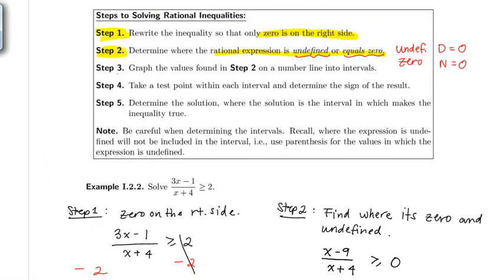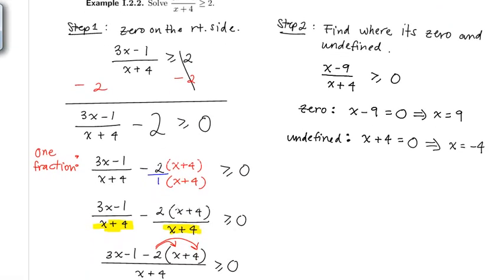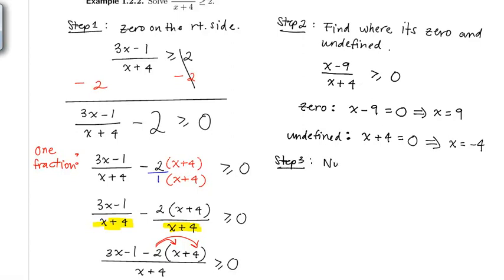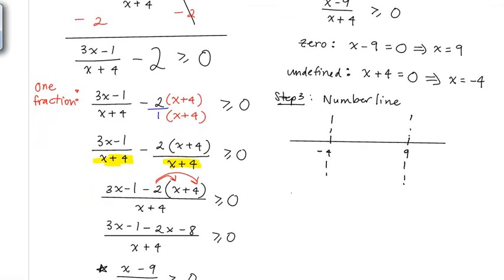Following the steps, we move to step three and graph these values on a number line, then take test points and determine the sign of the result. We put negative 4 on the left and 9 on the right with dashed lines. In step four, I'll take test values on each side: negative 5, 0, and 10. I'll evaluate (x minus 9) over (x plus 4) at each and determine the sign.